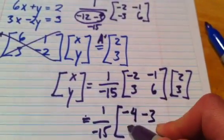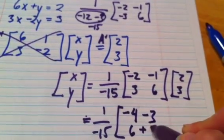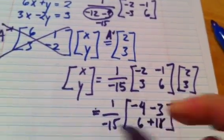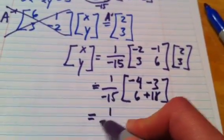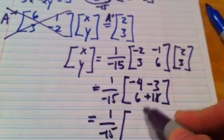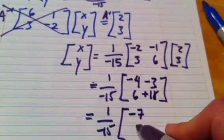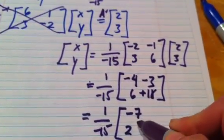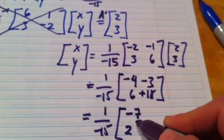And 6 plus 18. So we're getting 1 over negative 15, times negative 7, positive 24.